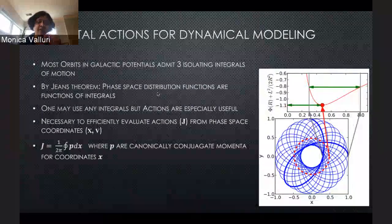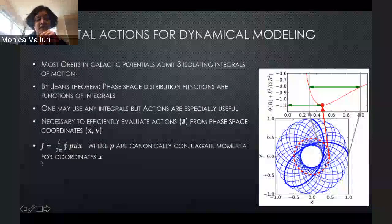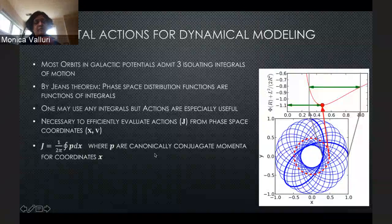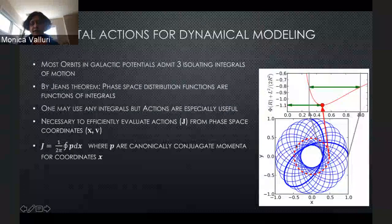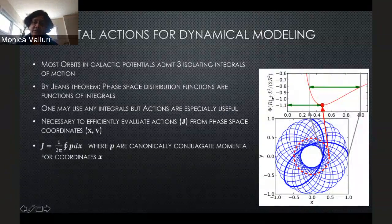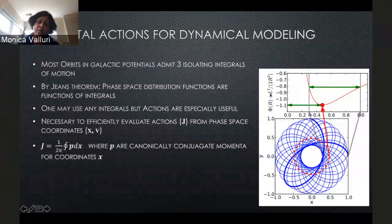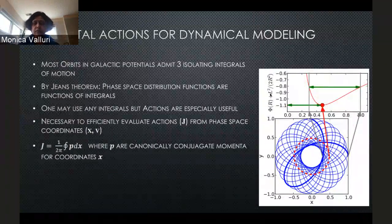It is actually very important to be able to evaluate actions from the phase-space coordinates. The action is defined by the integral of the canonically conjugate momentum P for each of the coordinates. For instance, a typical rosette orbit in a spherical potential conserves angular momentum, energy, and a third action — in this case the total angular momentum.